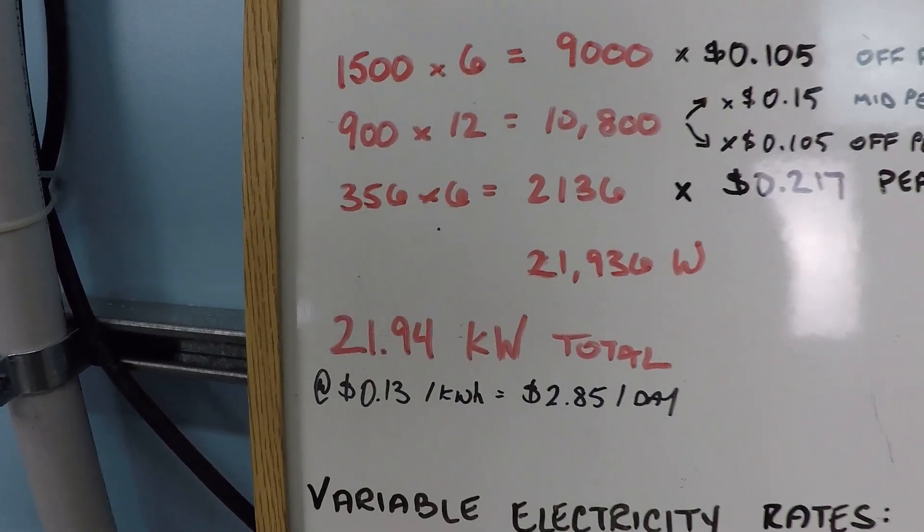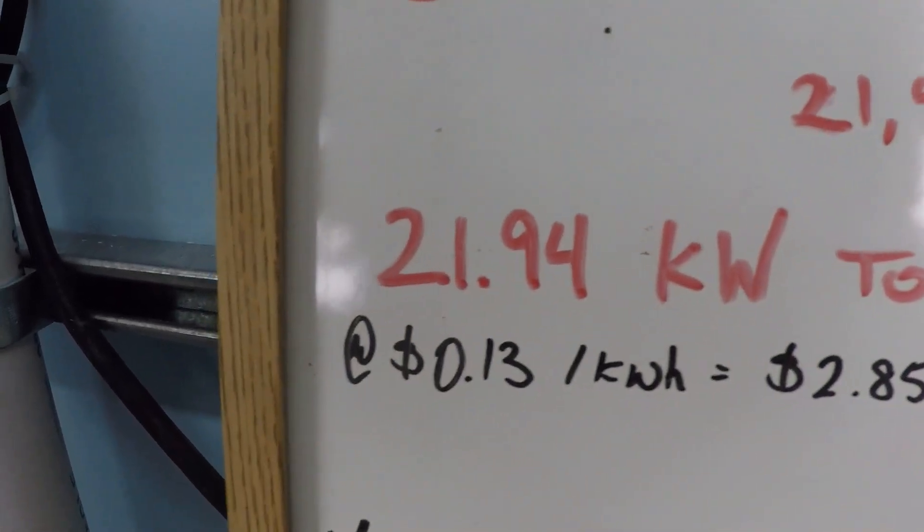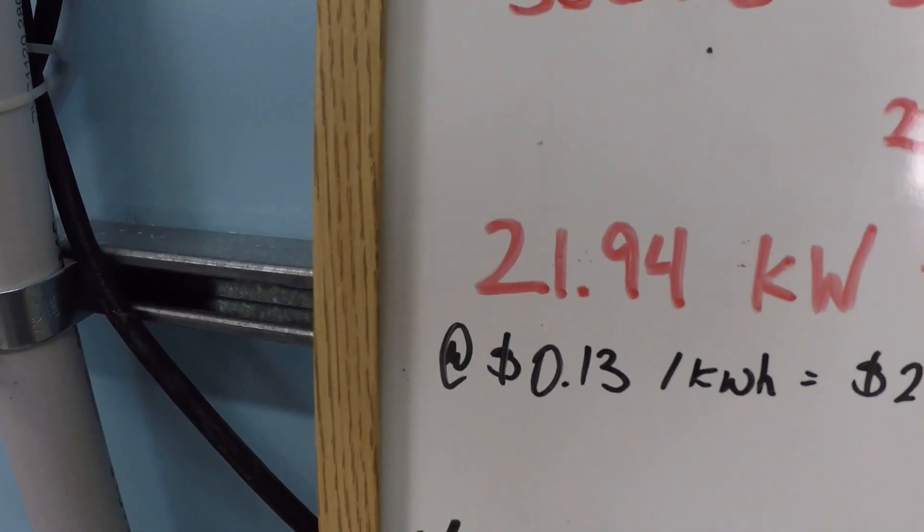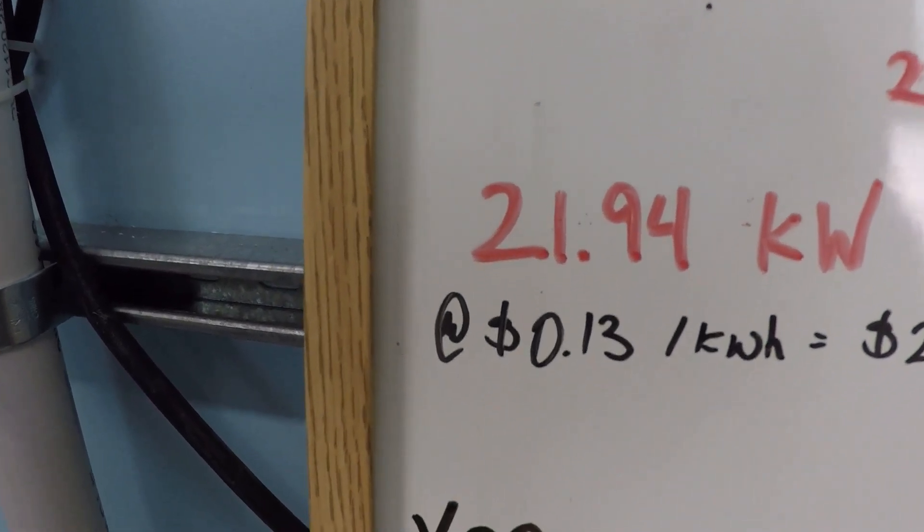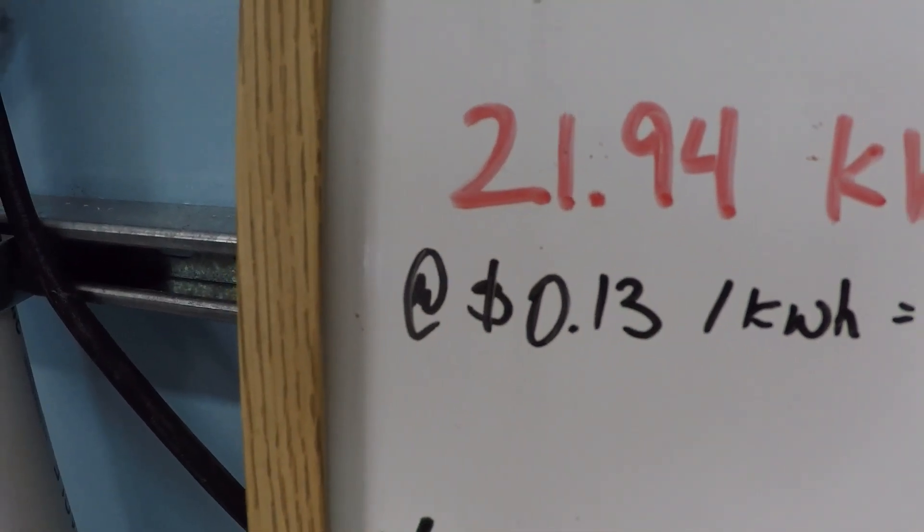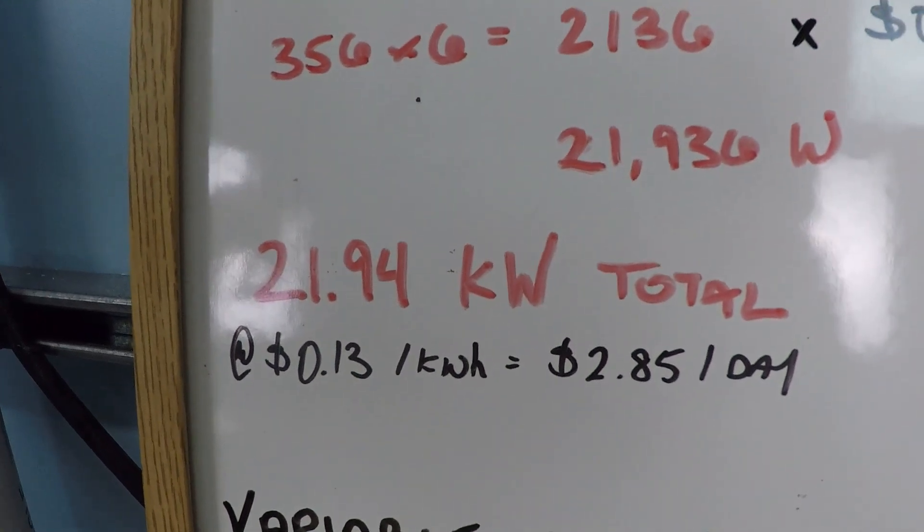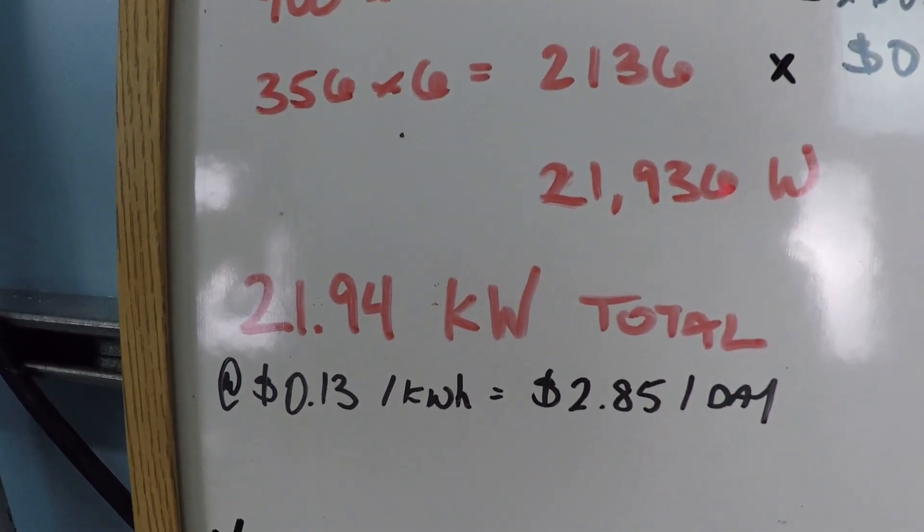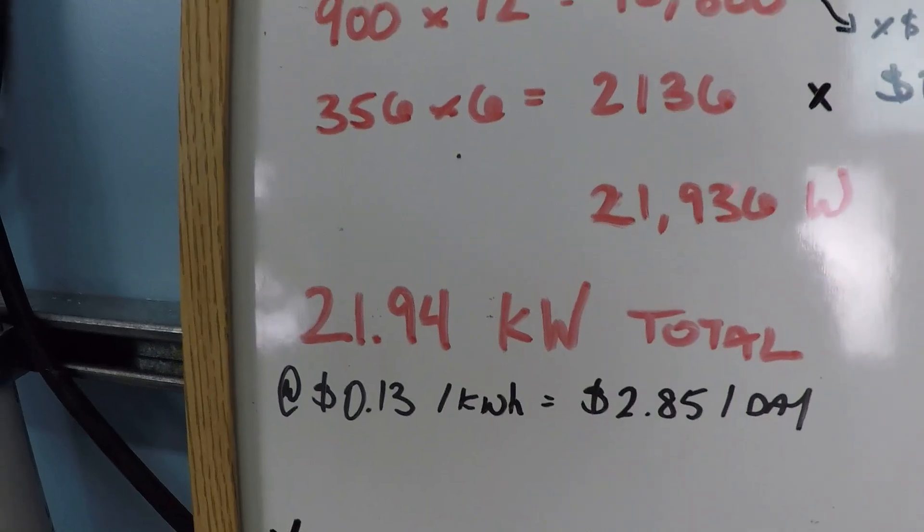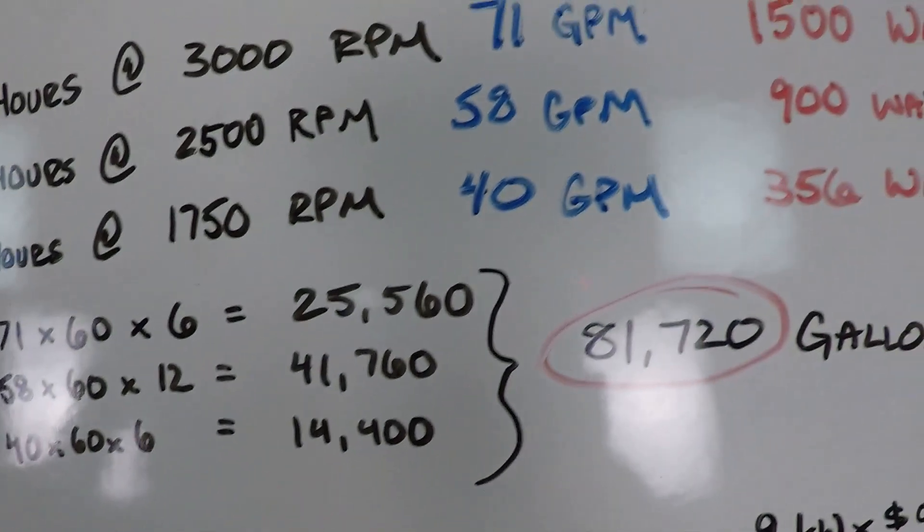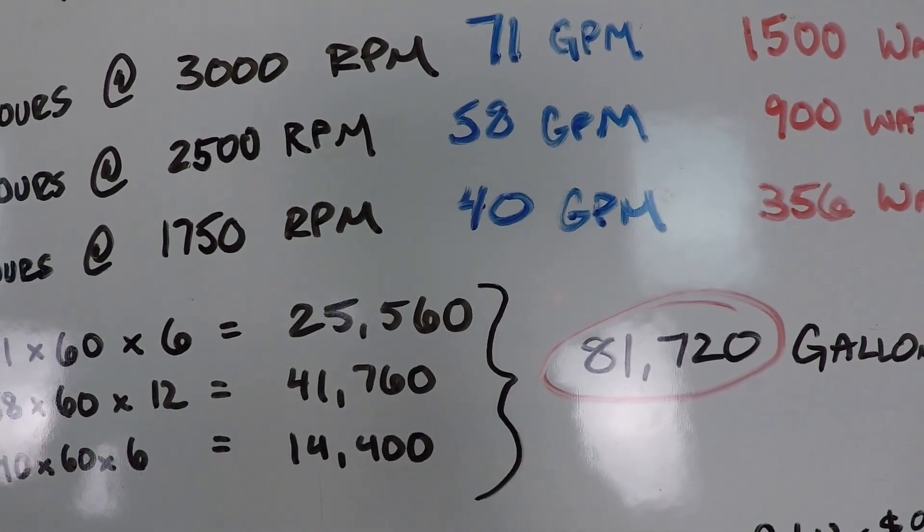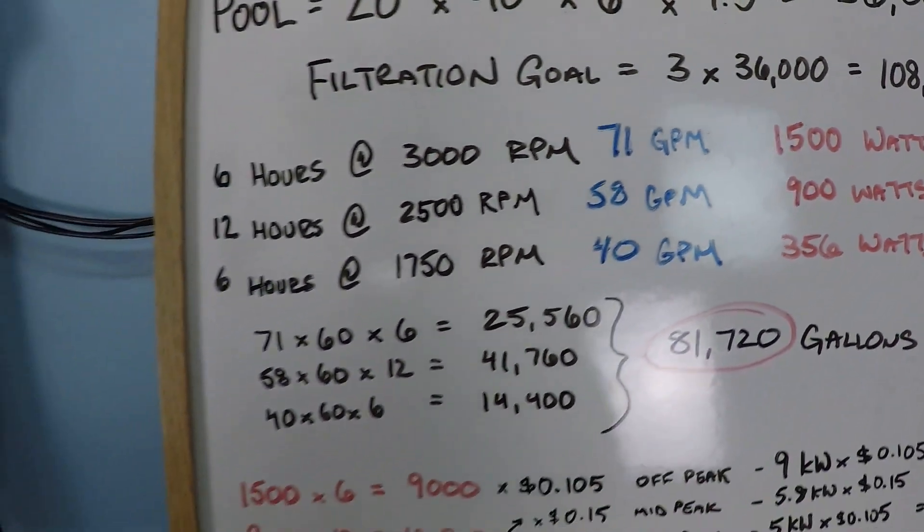Now for most of my videos at this point I would just say then okay, take that number 21.94 and times it by 13 cents, that's the national average per kilowatt hour. And if we did that in this video like all the rest we would have $2.85 per day in order to achieve just under 82,000 gallons of filtered water in this swimming pool.